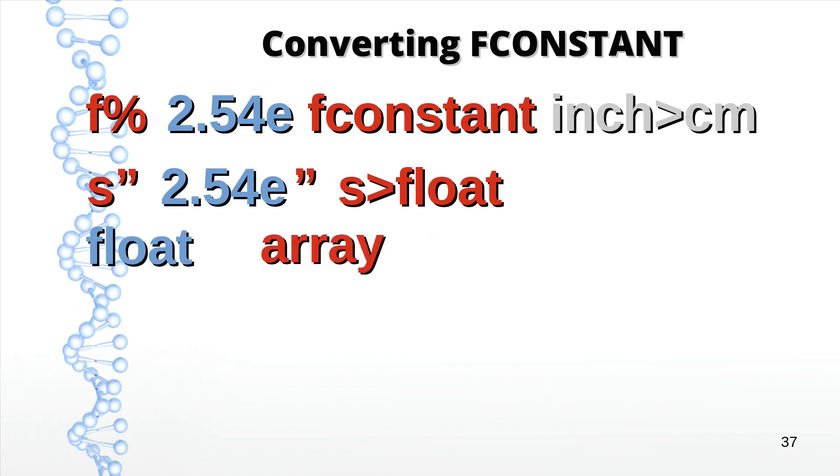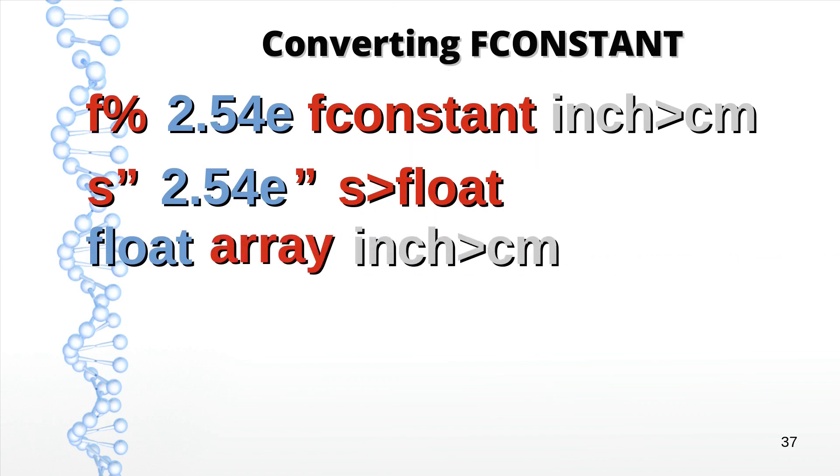Then we allocate some space for that floating point value, much like we did with fvariable. Fortunately, 4tH supports a word called latest, which always refers to the last definition. In this case, inch to centimeter. So we can use that one to initialize the variable.